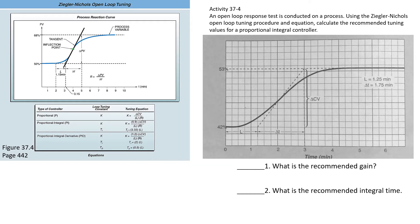Okay, this is Lab 37 for open loop tuning. This is the workbook page 212 on the right-hand side of your screen, and this is from page 442 in your textbook with the equations on the left-hand side of your screen. We're supposed to use Ziegler-Nichols to calculate recommended tuning values for a proportional-integral controller.